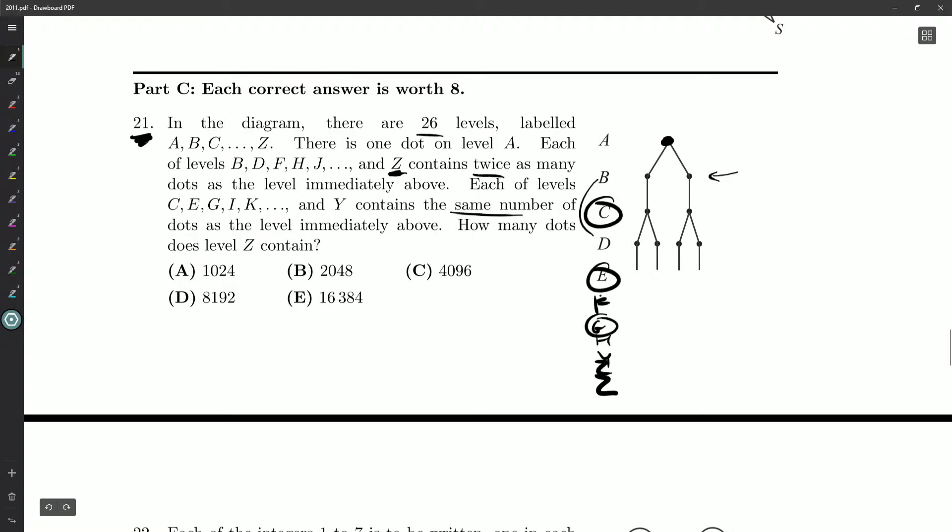These levels contain the same number of dots as the level immediately above, so these two dots here are immediately reproduced, but then when we go down to D, they double, and then E, we reproduce them again, and then they would double at F.